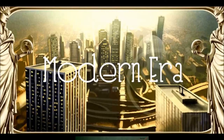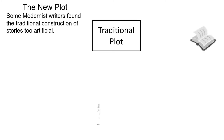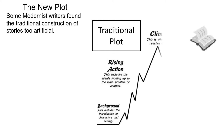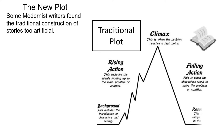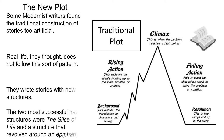Another way the modern era tried to 'make it new' was with a new type of plot. Many new writers found that the traditional plot was too artificial — that background, rising action, climax, falling action, and finally resolution did not reflect real life. They wrote stories with new structures. The two most successful new structures were the slice of life and a structure that revolved around an epiphany.